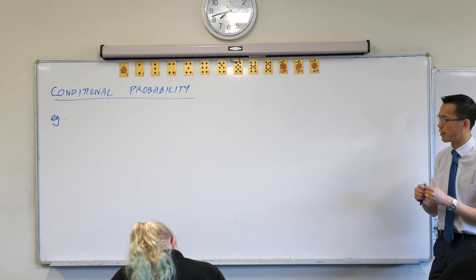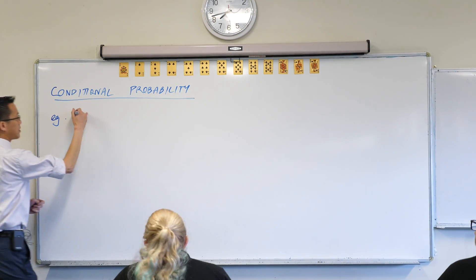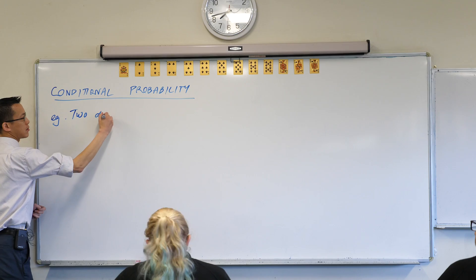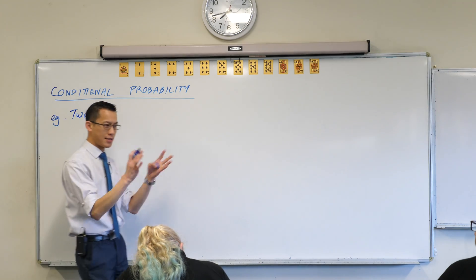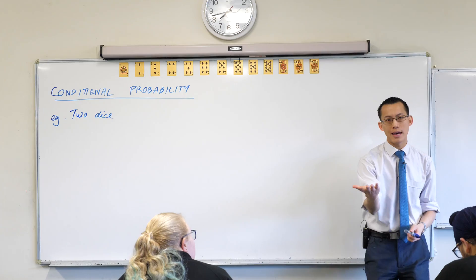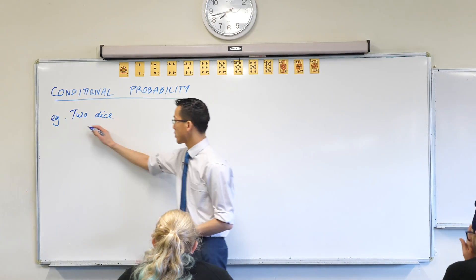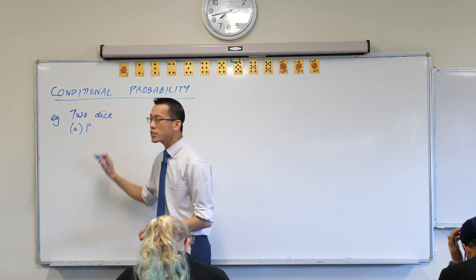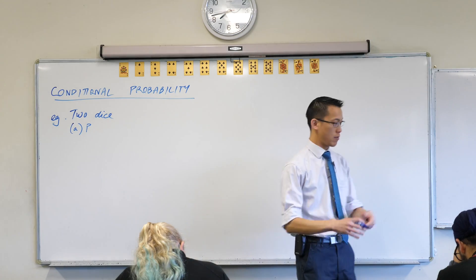Example situation: we're going to say we roll two dice. This is as classical as you can get for a probability situation. So imagine the two dice in your hand, we rolled it.